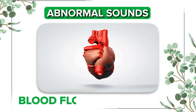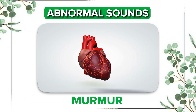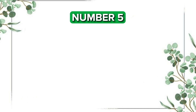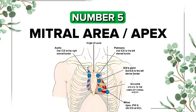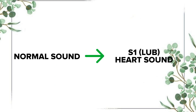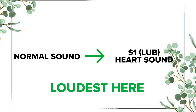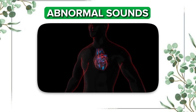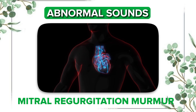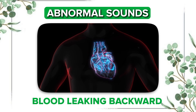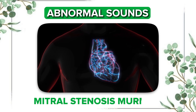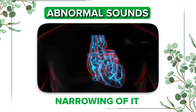The fifth spot is the mitral area, or apex, located at the fifth left intercostal space at the midclavicular line. This is the best place to hear the mitral valve. The normal sound is S1 or 'lub,' which is the loudest here. Abnormal sounds include a mitral regurgitation murmur, which is blood leaking backward, or a mitral stenosis murmur, which refers to narrowing of the valve.